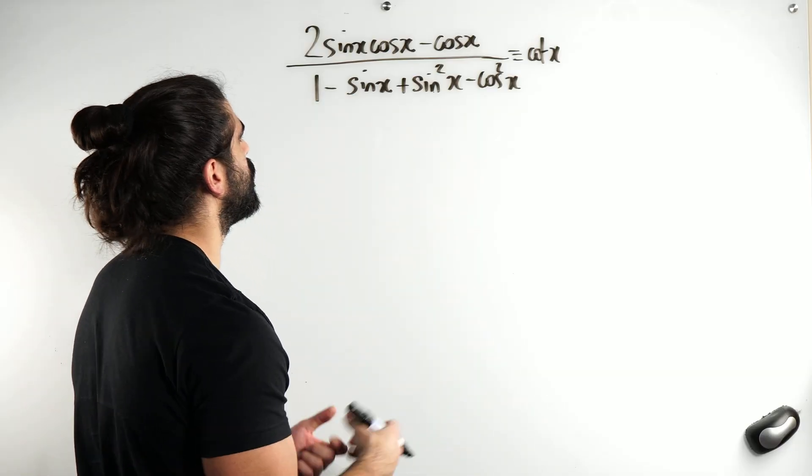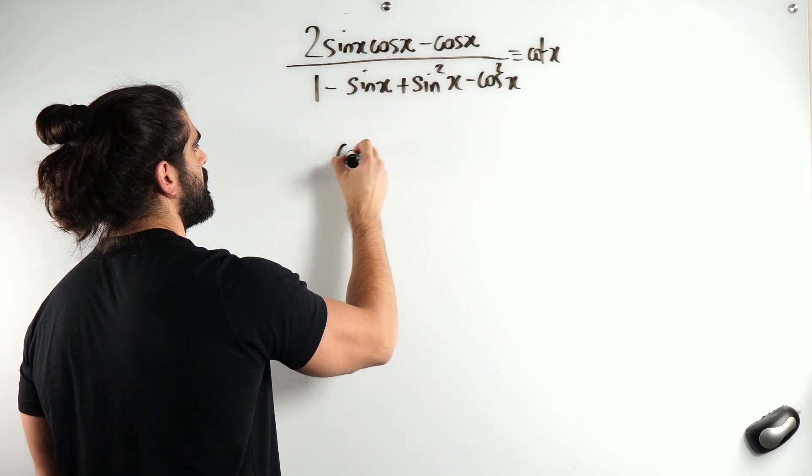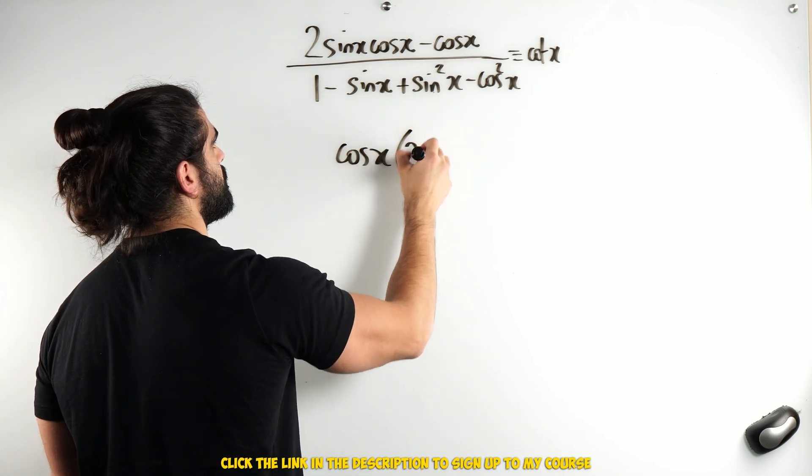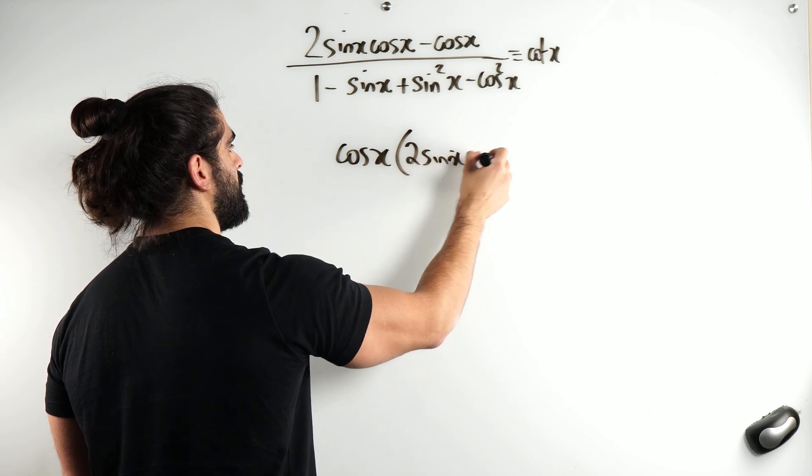Now, on the numerator, I see a cos. I'm going to factorize it out, see what happens. So you have 2 sine x minus 1.